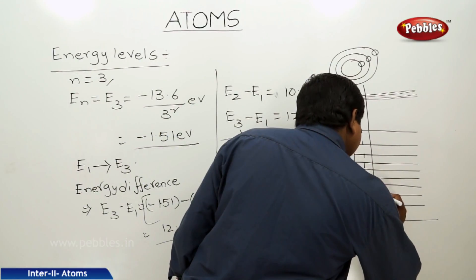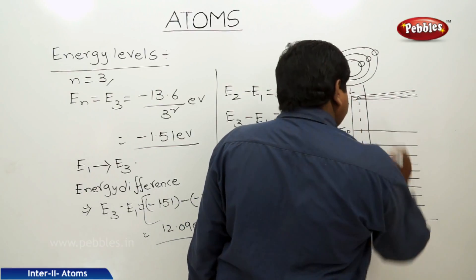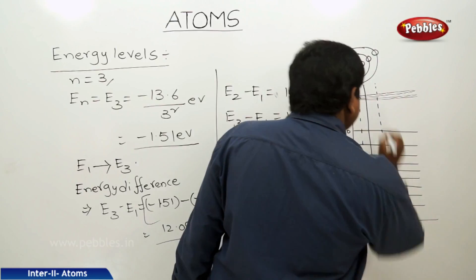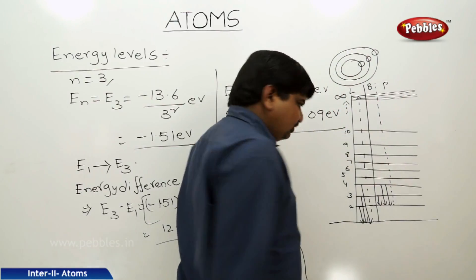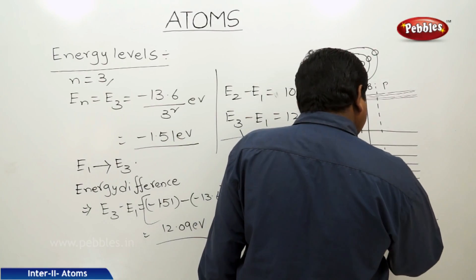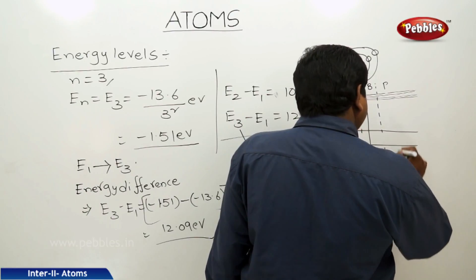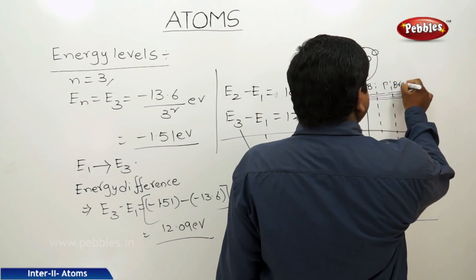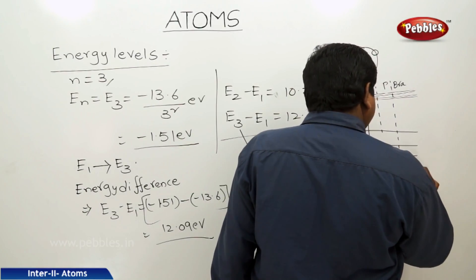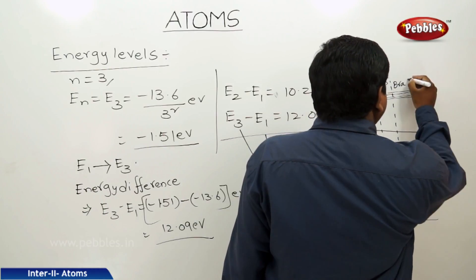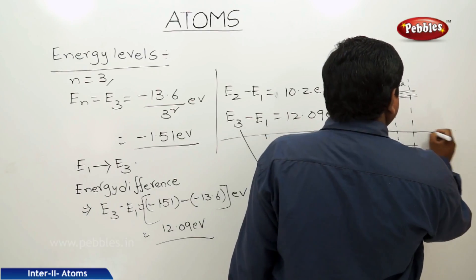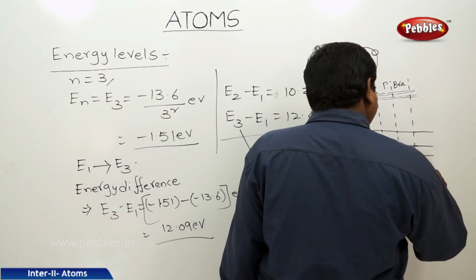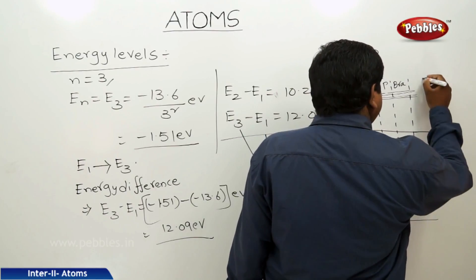The Balmer series involves transitions down to n equal to 2: from 3 to 2, 4 to 2, 5 to 2, and from infinity to 2. Next is the Paschen series, with transitions down to n equal to 3: from 4 to 3, 5 to 3, 6 to 3, and so on. The Bracket series goes from 5 to 4, 6 to 4, 7 to 4, and infinity to 4. The Fund series goes from 6 to 5, 7 to 5, 8 to 5, and infinity to 5.